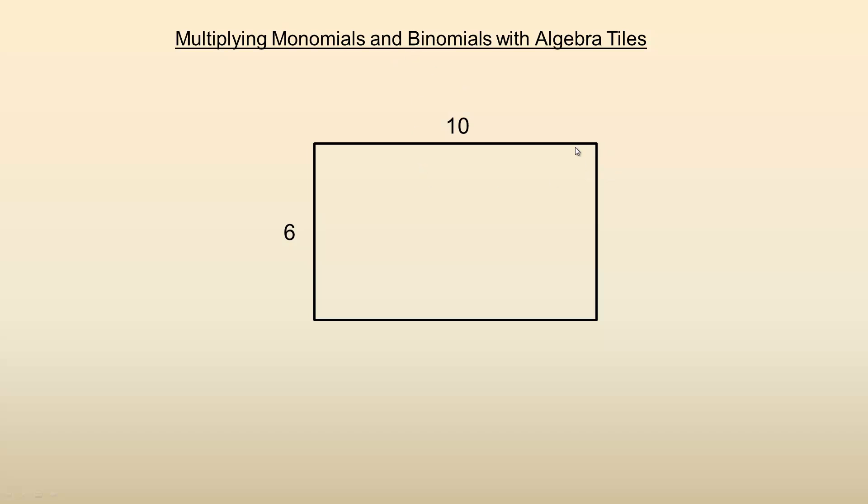So I can model the area of this rectangle by making, and what I'm trying to model here is what six times ten is. So if I make a rectangle with one dimension six and the other one ten, the area of a rectangle is length times width. So multiplying six by ten gives me my area.